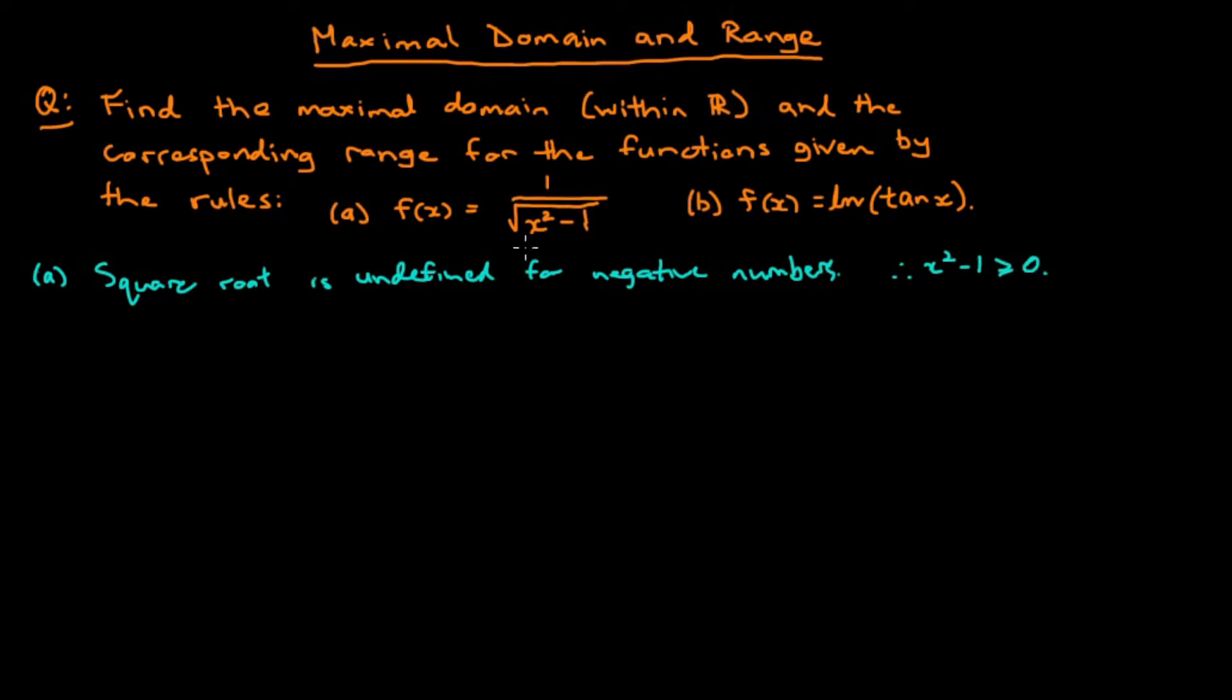So this means we need x squared minus 1 greater than or equal to 0. We can also see that this is a denominator here, and we can't have a zero denominator. So we also need a non-zero denominator, which means that x squared minus 1 must be not equal to 0.